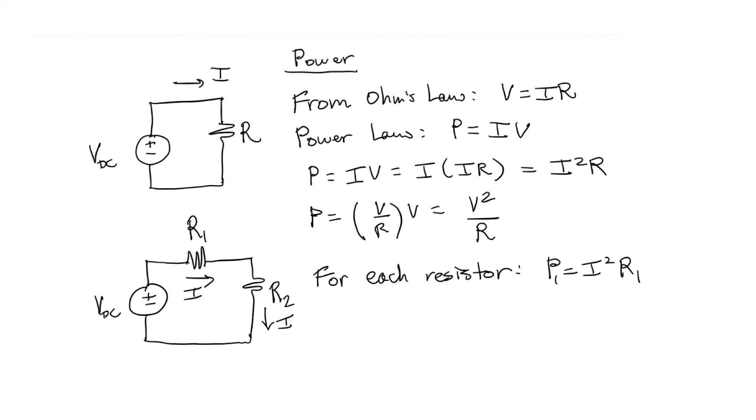For the second resistor, since we have the same current flowing, and I've labeled it just I, the power consumed is I squared R sub 2. Now, if I ask the question, what is the power supplied by the DC power supply in this case, it's the sum of the two, because we have to have conservation of power.